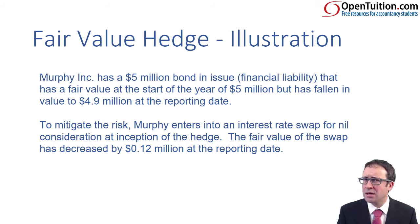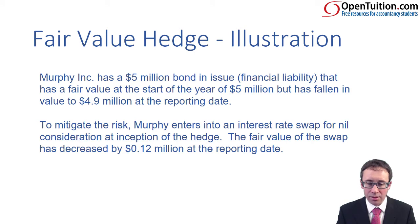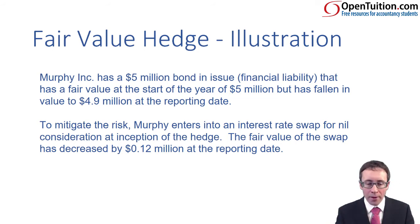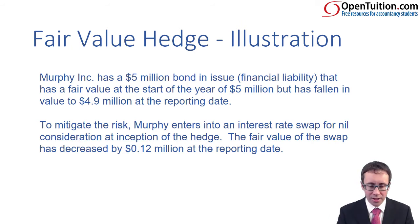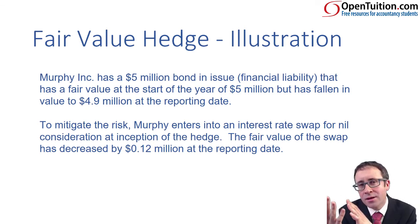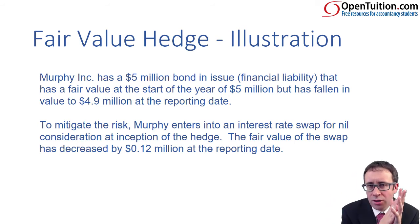It's a good thing — it's not an asset. If there was a fall in the value of the asset, that would be a bit of a detriment to the business. Here, the value of the loan has fallen — that's actually a good thing, so there's an actual gain on the item. That item is being protected because we're worried about the value going above $5 million and therefore paying more. But it says to mitigate the risk, Murphy enters into an interest rate swap for nil — so you don't pay anything initially at the inception of the hedge, just a verbally signed agreement that the amounts will be swapped. The fair value of the swap has decreased, which makes sense: if you've got a gain on the item, you must have a loss on the instrument.